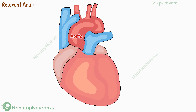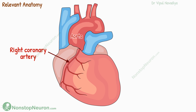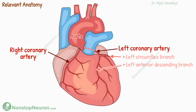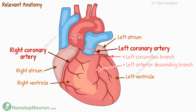First, let's quickly revise some relevant anatomy. The main blood supply to the heart comes from the right coronary artery and the left coronary artery, both originating from the aorta. Roughly speaking, the right coronary artery supplies the right atrium and right ventricle, and the left coronary artery supplies the left atrium and ventricle.